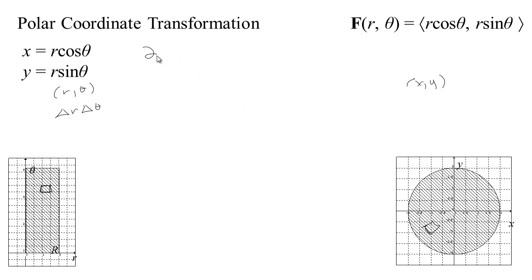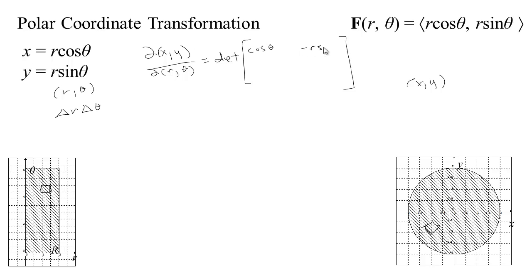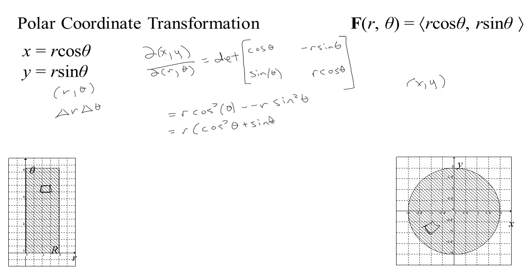We just have to find the partial of x and y with respect to r and theta — meaning we need the determinant of this matrix of first partials. x is r cosine theta, so the derivative of x with respect to r is cosine theta, and the derivative of x with respect to theta is minus r sine theta. The derivative of y with respect to r is sine theta, and the derivative of y with respect to theta is r cosine theta.